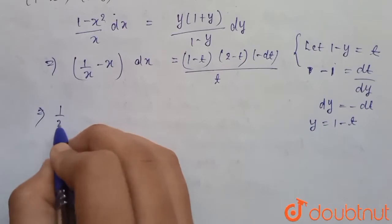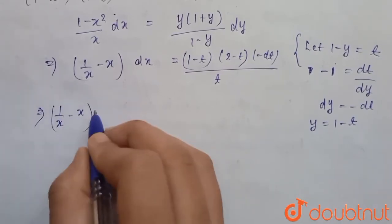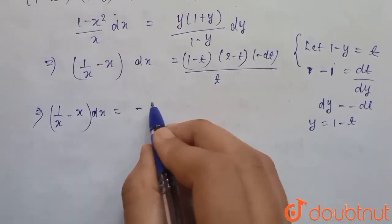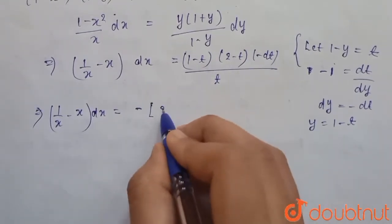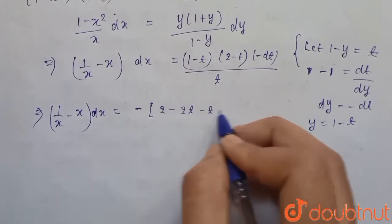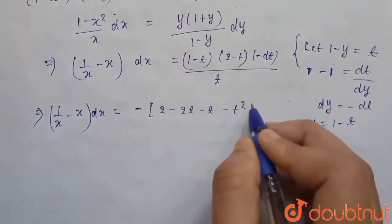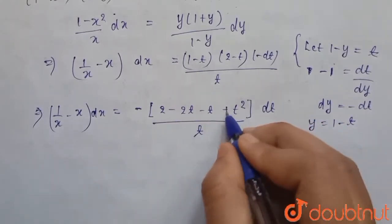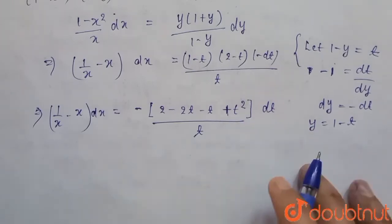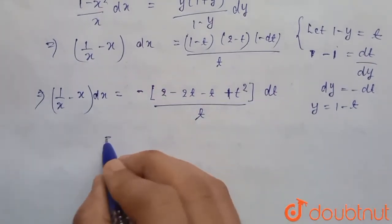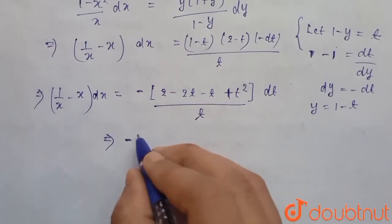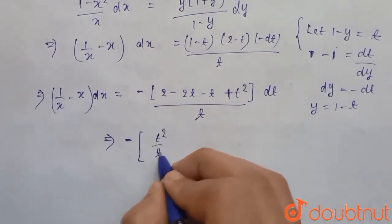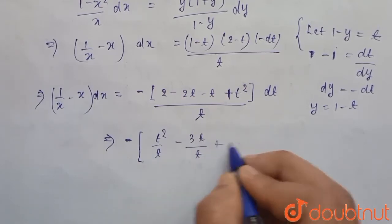So we can write the left side as (1/x - x) dx. On the right side, multiplying out: (1 - t)(2 - t) gives 2 - 2t - t + t², so we have (2 - 3t + t²) / t, which we can write as t² - 3t + 2 over t, dt.